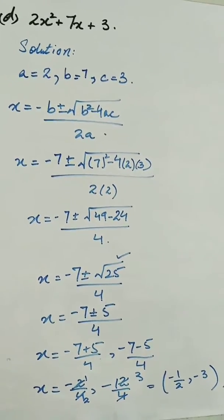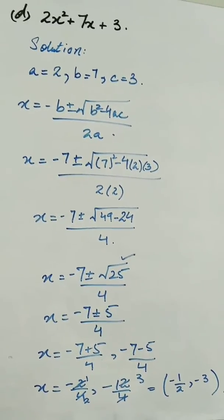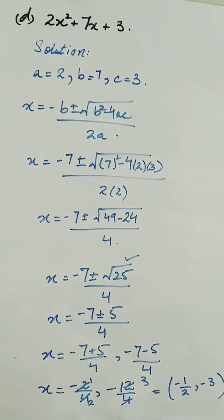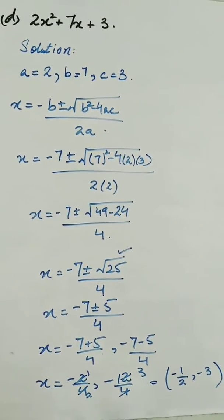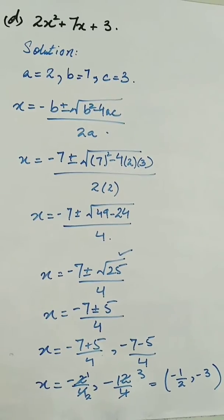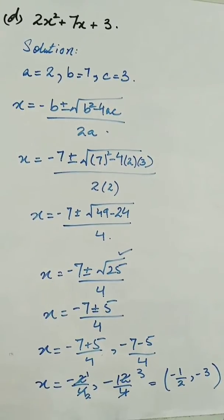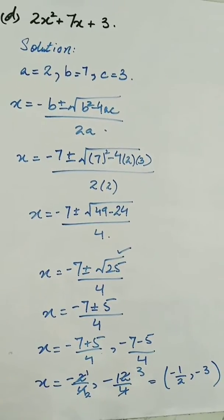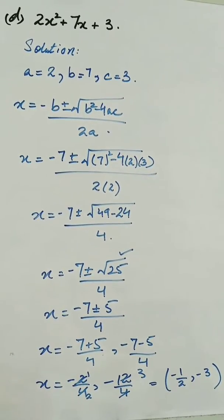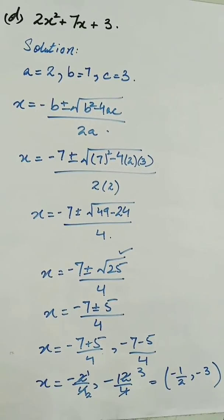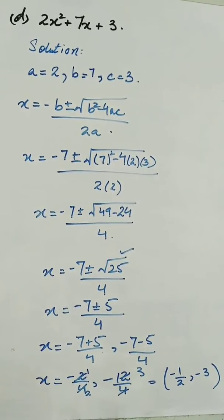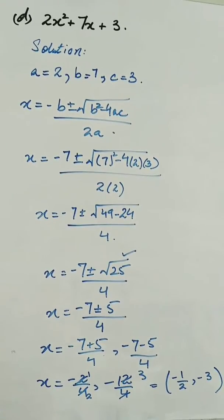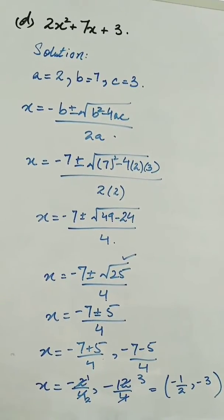So we have solved 4 different types of questions. The first one where the answer comes in surd or root form. The second one where the expression b squared minus 4ac becomes 0 and the answer is a repeated root. The third one where b squared minus 4ac is negative and there is no solution. And the fourth one where the answer comes out in integer form.